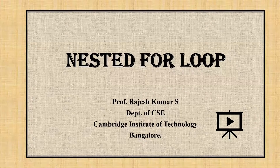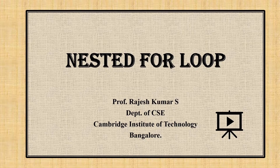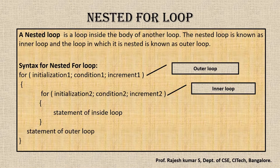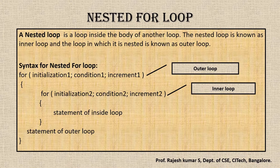Hi everyone, this is Professor Rajesh from Cambridge Institute of Technology, Bangalore. Today I'll be explaining about nested for loops. A nested for loop is a feature in C that allows the looping of statements inside another loop. We will use nested for loops for tabular data.